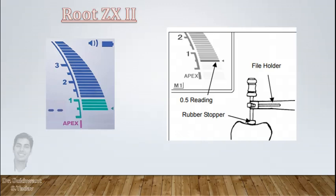Rest all other markings like 1 or 2 or 1.5 on display don't have any significance. Just focus on 0.5 mark that is apical constriction.